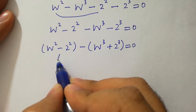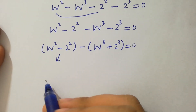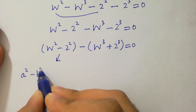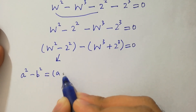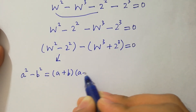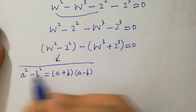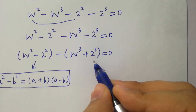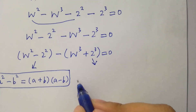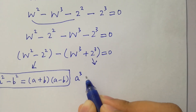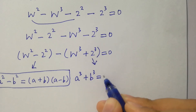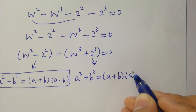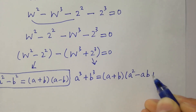For w squared minus 2 squared, we know the formula: a squared minus b squared equals a plus b times a minus b. And for w cubed plus 2 cubed, we know the formula: a cubed plus b cubed equals a plus b times a squared minus ab plus b squared.